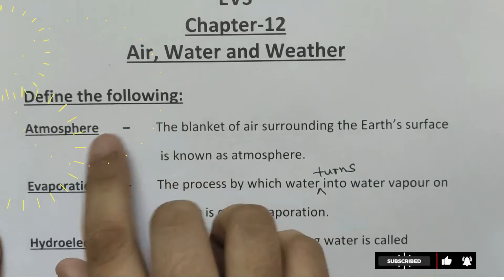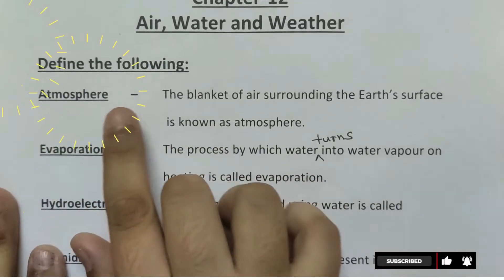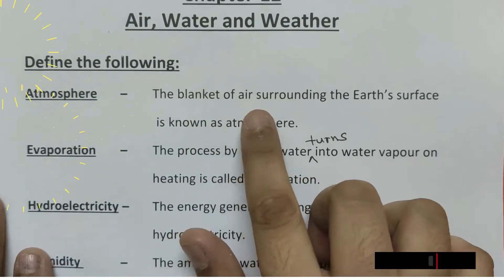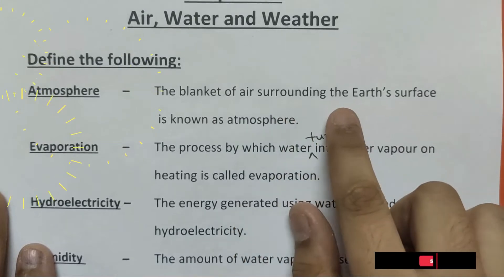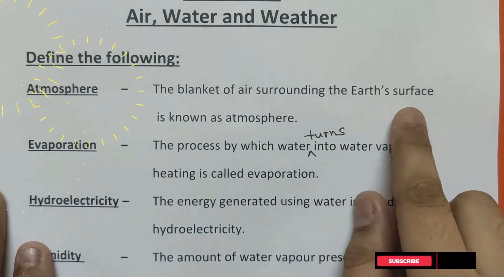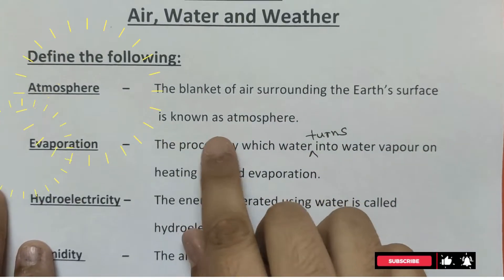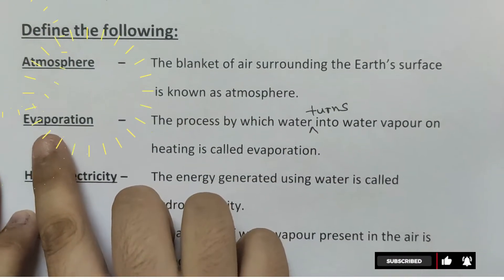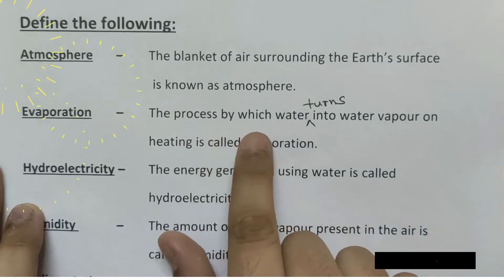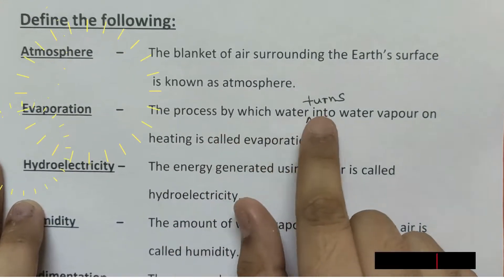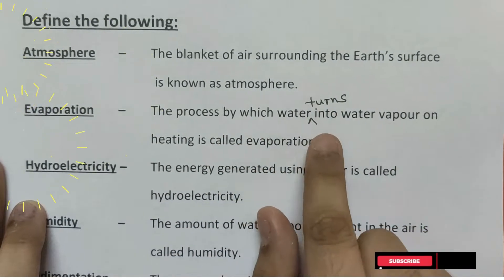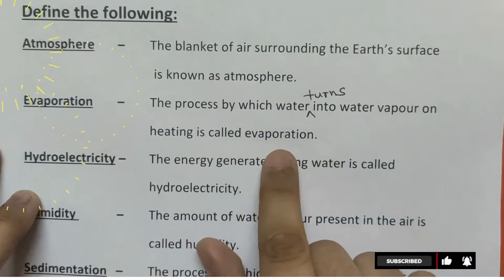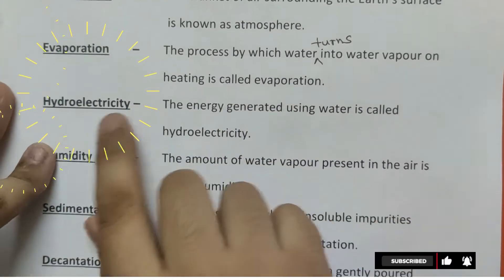Define the following. Atmosphere: the blanket of air surrounding the earth's surface is known as atmosphere. Evaporation: the process by which water turns into water vapor on heating is called evaporation.